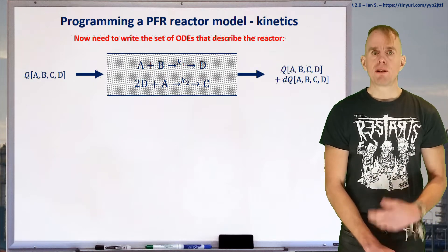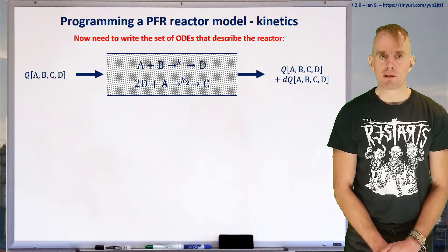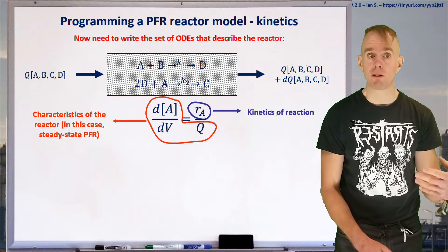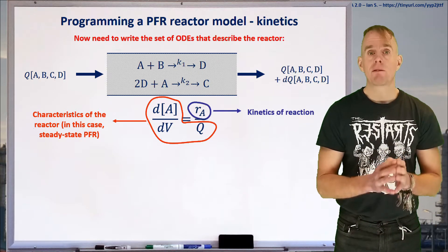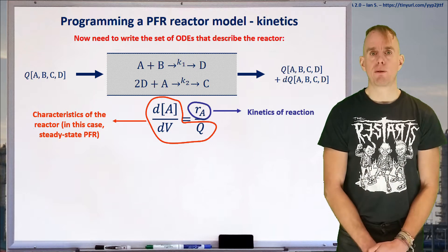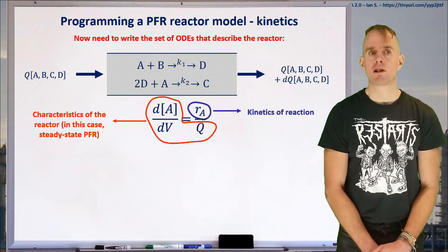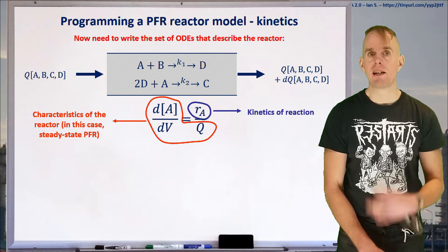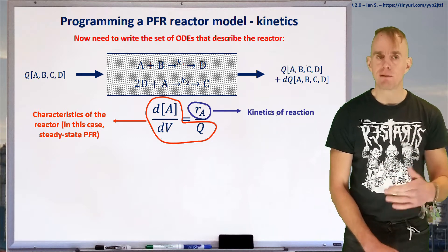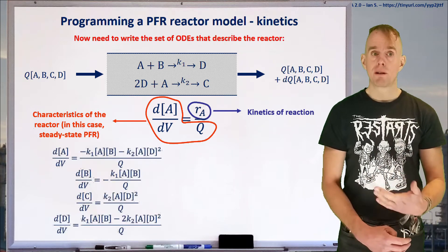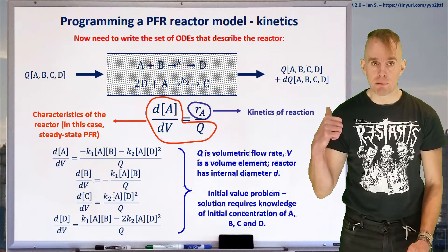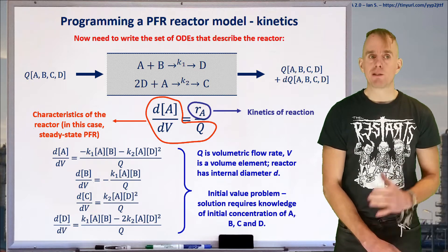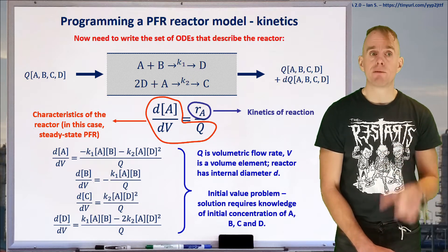What I'd like to do now is convert these rate equations into ordinary differential equations. We need to tie together the characteristics of the chemical reactor with the kinetics. For a plug flow reactor, d/dV multiplied by concentration equals the rate equation divided by Q. For species A, dA/dV equals Ra/Q. We can take the rate equations derived previously and substitute them into this form. Q here is my volumetric flow rate and V is the reactor element volume.